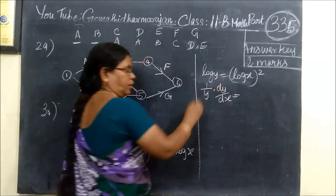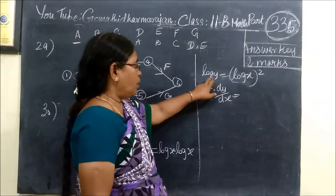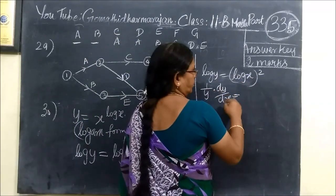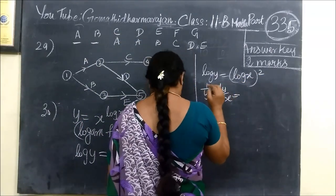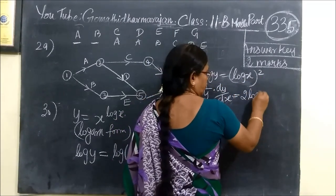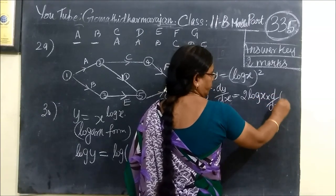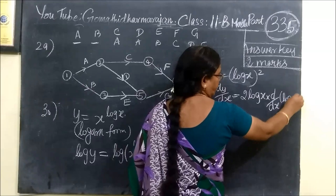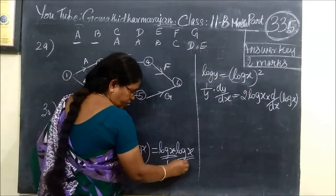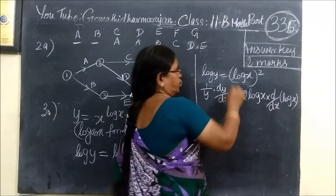Differentiate: log y equals log x whole square. But log y equals the whole square — we have two squared. Log y equals the whole square — we make that mistake, it is easy to write like this. Now we have 2 log x equals log x.